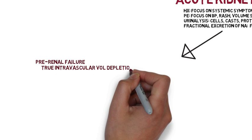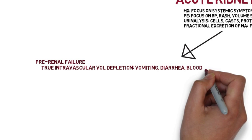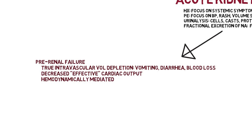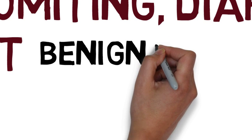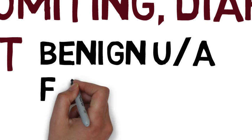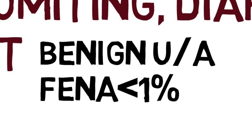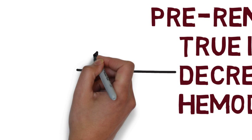We then divide this into pre-renal kidney failure, the first of three categories, with true volume depletion, effective decrease in cardiac output, or functional changes. The key findings are a urinalysis that is relatively benign and a fractional excretion of sodium less than 1.